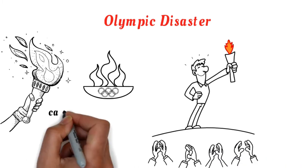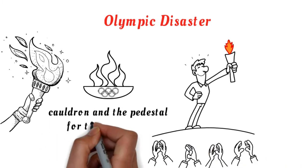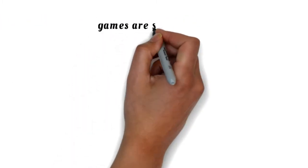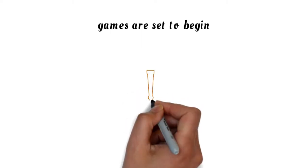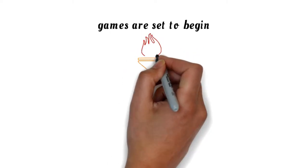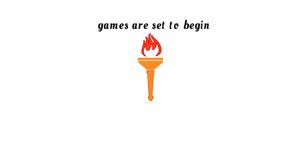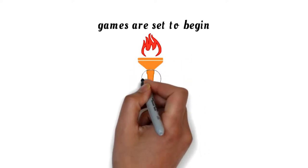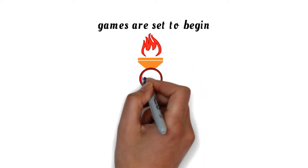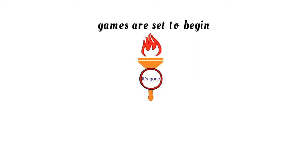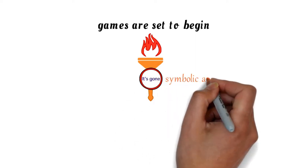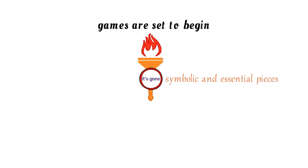The host country designs the cauldron and the pedestal for the ceremonies. The opening ceremony has been held and the games are set to begin, but we've encountered one small problem. Would you believe me if I told you that it seems the torch has been misplaced? It's gone, and no one knows where it is. One of the most symbolic and essential pieces of the ceremony has been lost.